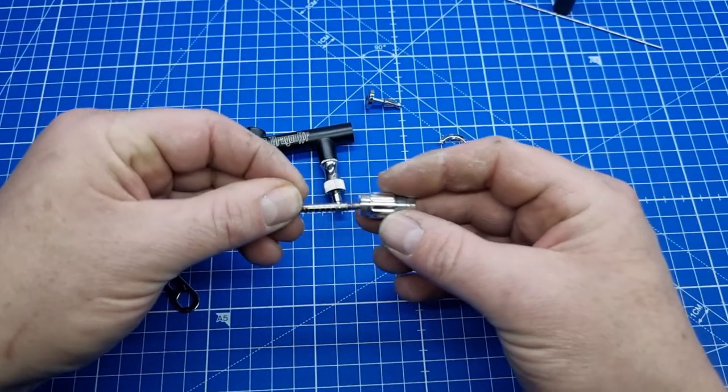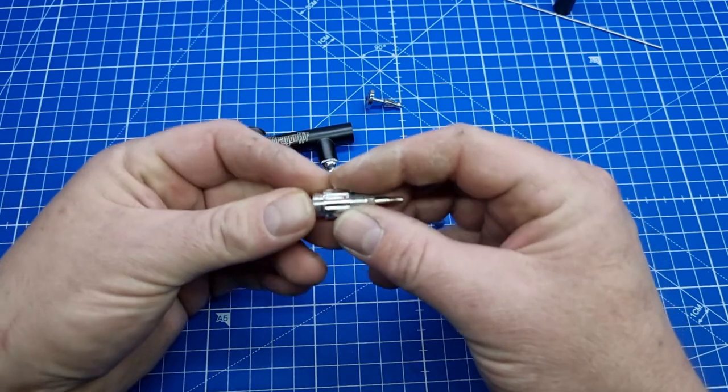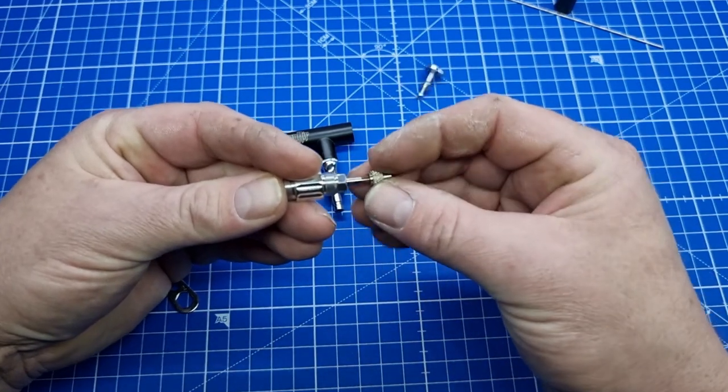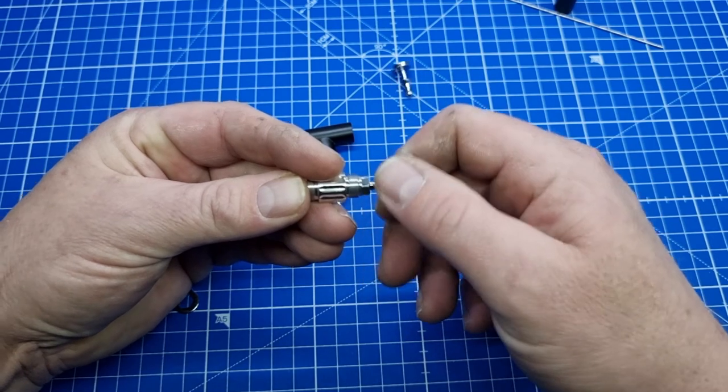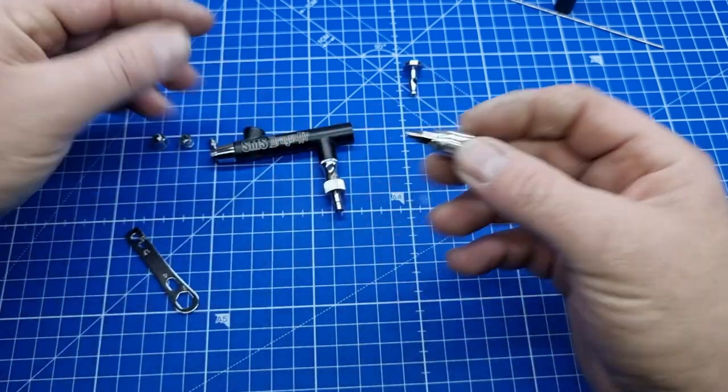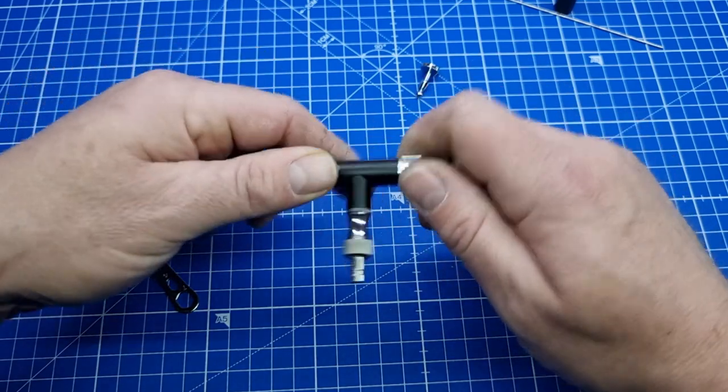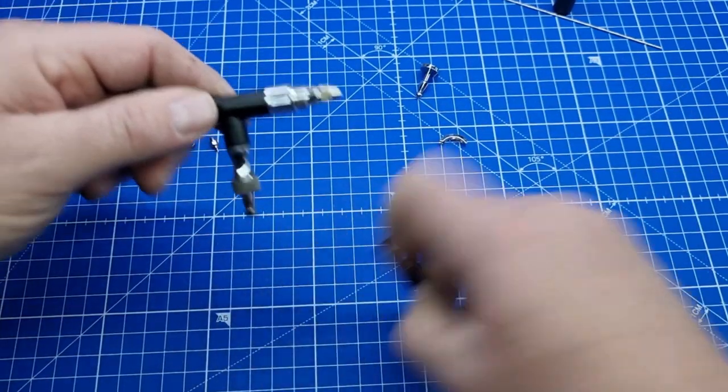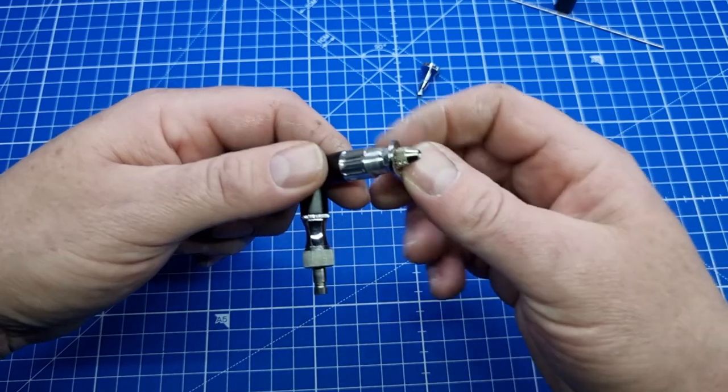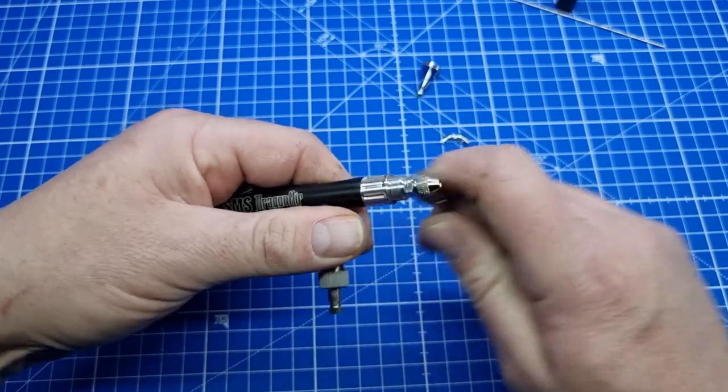Now that's back in, we'll put this section back together. It's a matter of pushing it back in there, just putting the collet on the other end just a little bit, and then that's back together. Then we can thread that back into the rear end of the airbrush, and again we'll just tighten that with our spanner.